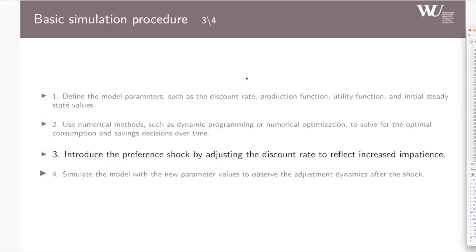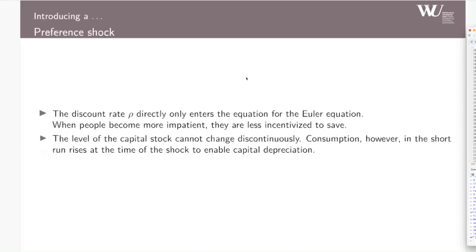The preference of households is captured in the so-called discount rate, the rho in my model. This parameter has to be higher if the impatience of households increases. If we remember the Euler equation, we know that the discount rate rho directly only enters the equation for the Euler equation, but not the capital accumulation equation. When people become more impatient, they are in effect less incentivized to save. But only the consumption can initially change, not the capital stock. As we will see in a second, consumption more or less jumps at the point of the shock, but capital only adjusts in the longer run. It is therefore necessary to look at the short, the middle, and the long run, and not only the long run.